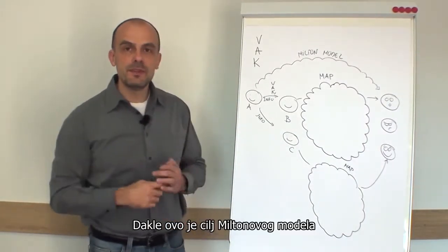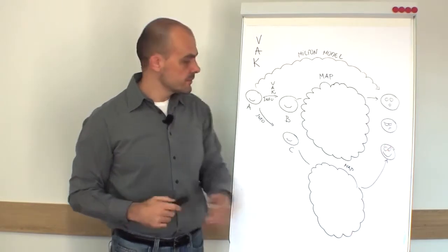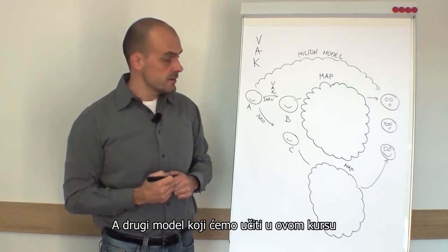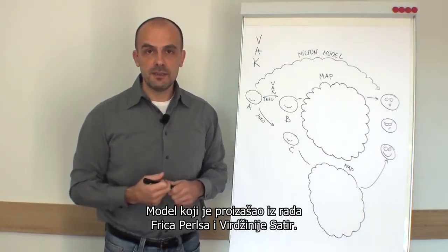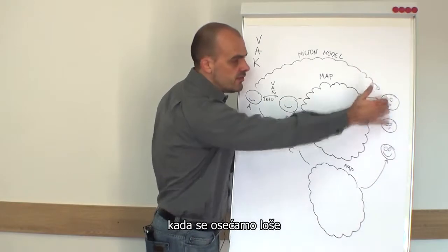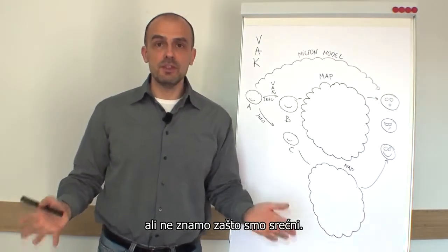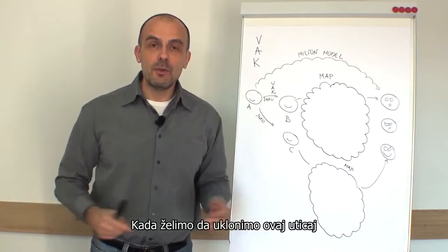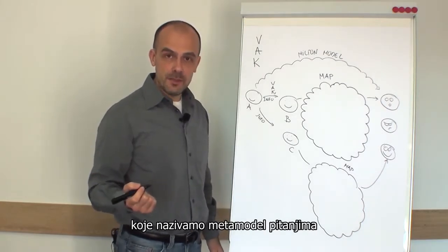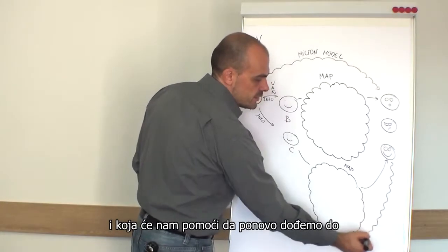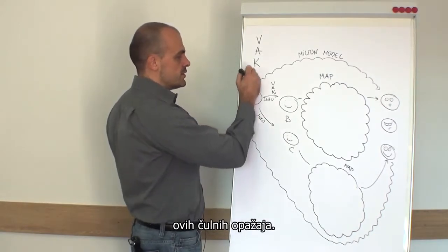This is the goal of the Milton model: to trigger a certain emotional reaction within people. The second model we will learn in this course is the so-called Meta model — a model that came from the work of Fritz Perls and Virginia Satir. In a situation when there is influence and we feel bad, angry, or maybe happy about a product but don't know why — when we want to remove this influence, we will use a set of questions called meta-model questions that will help us get back a sensory-based description.